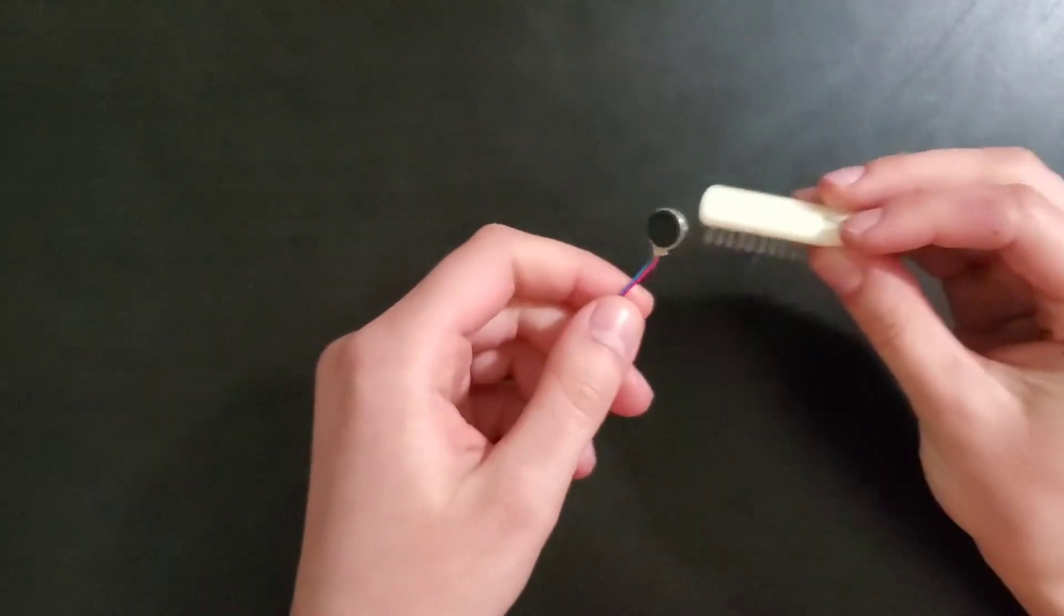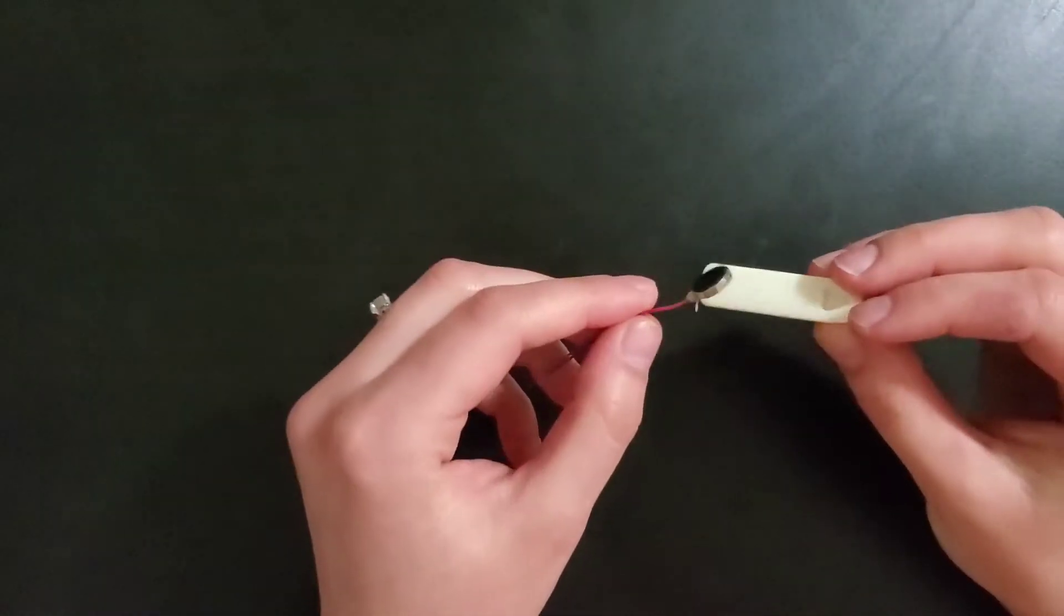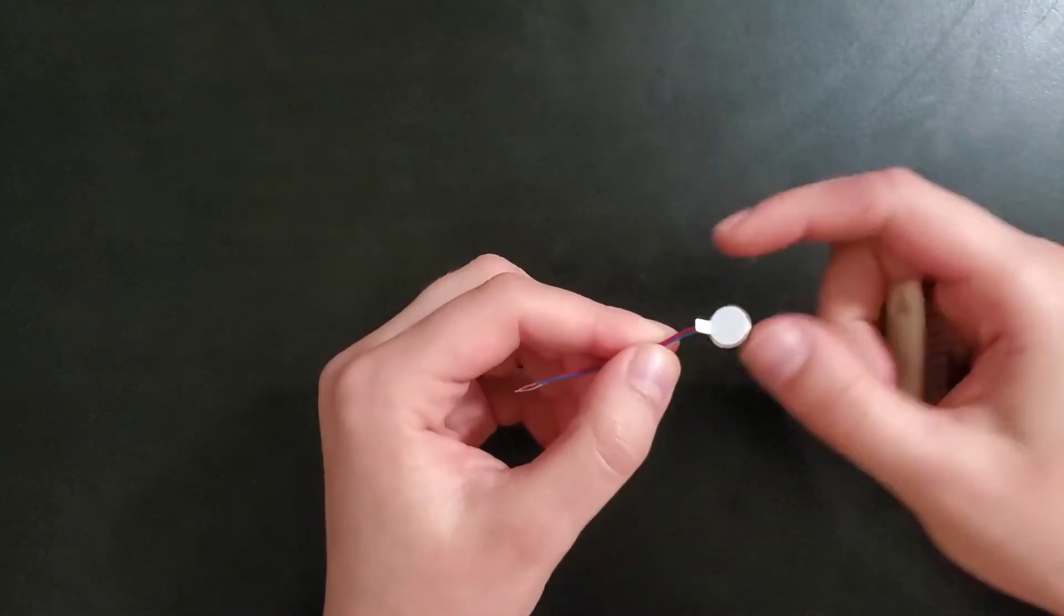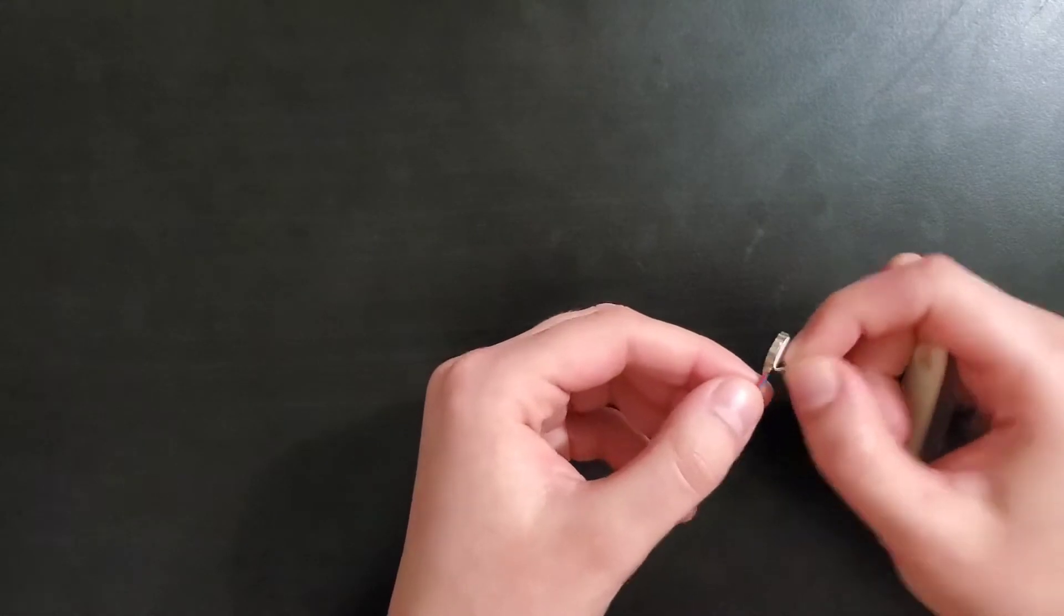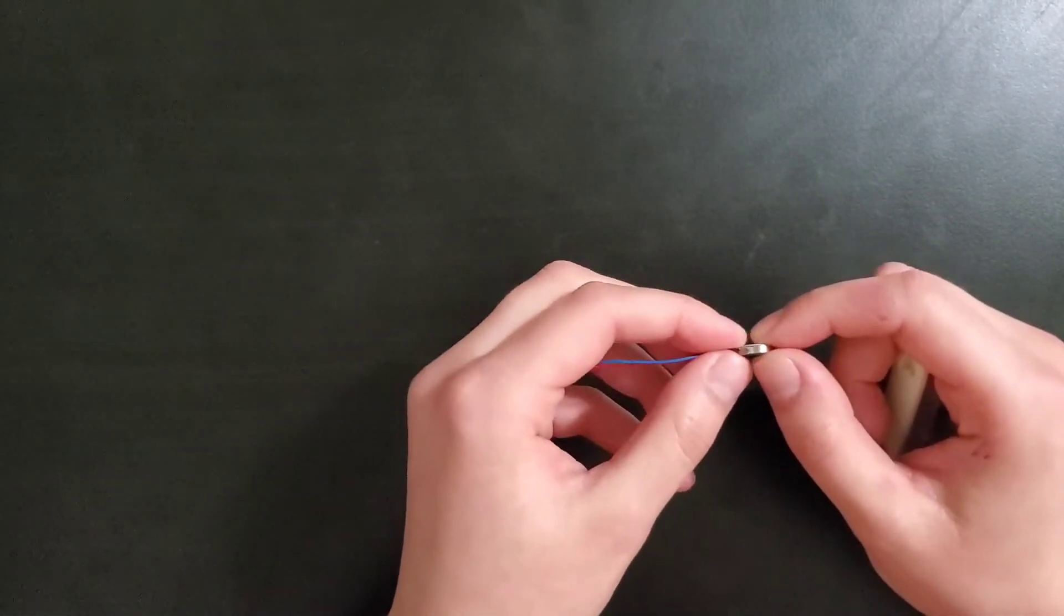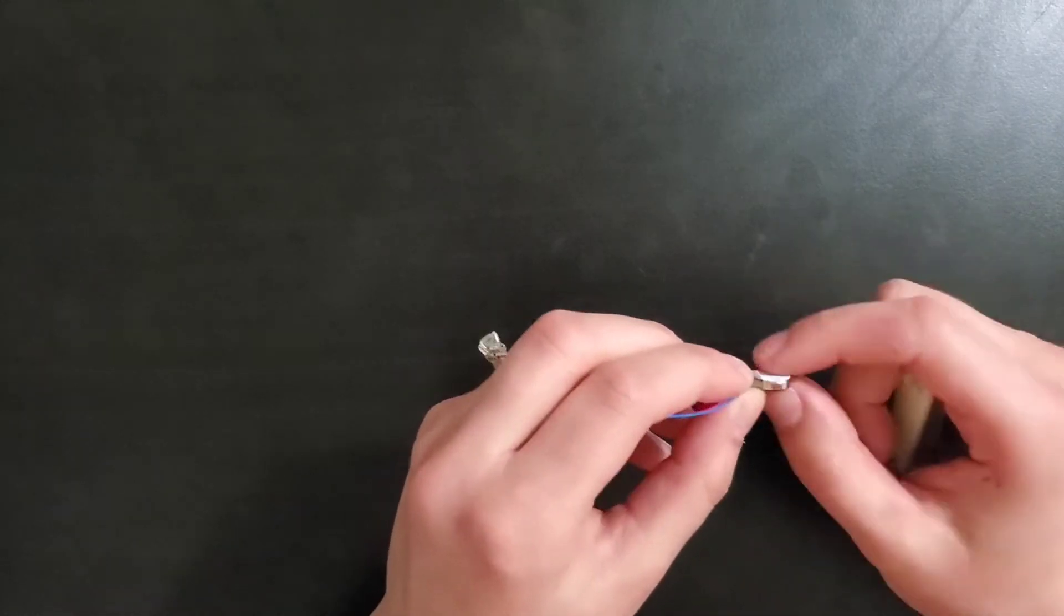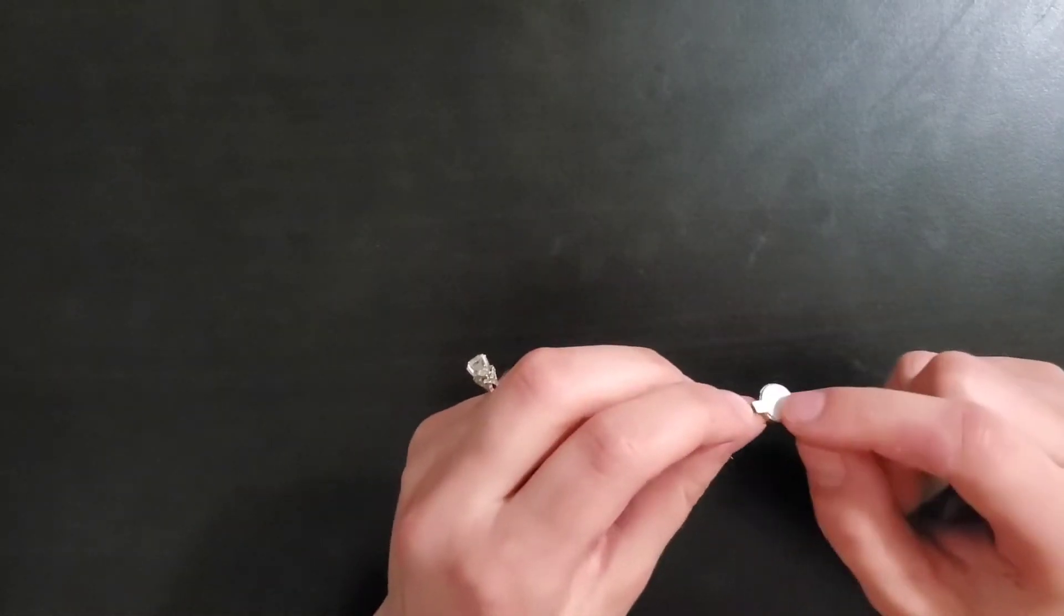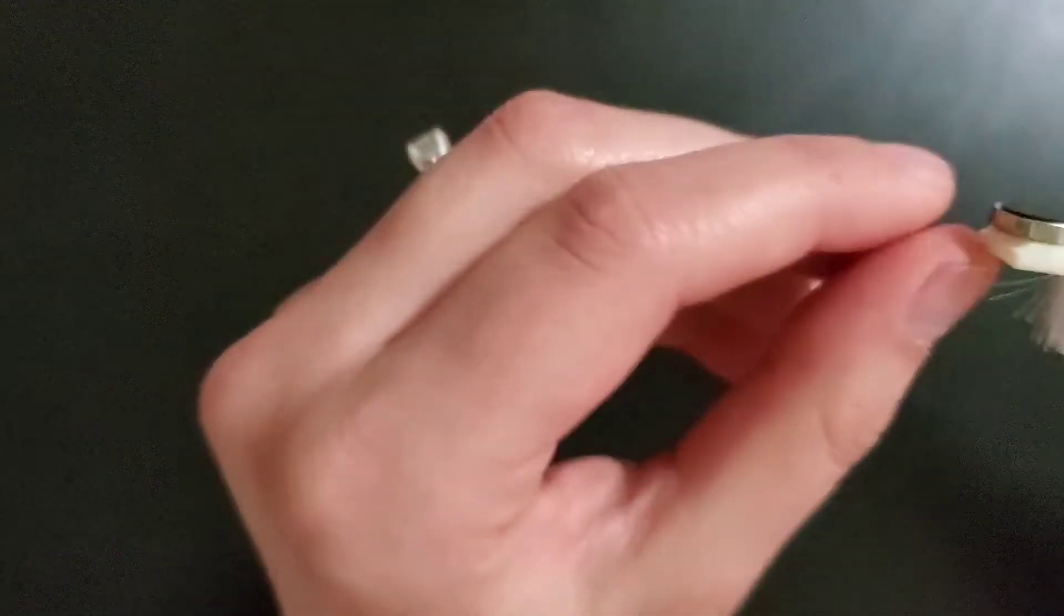So the first step is to take your motor and your brush head and you'll want to attach your motor to the end of your brush head. This specific motor has a piece of paper right here that you can peel off and it has a sticky side. If your motor doesn't have a sticky peel off backing then you can just take some tape and tape it onto your motor. And what that looks like is like this.